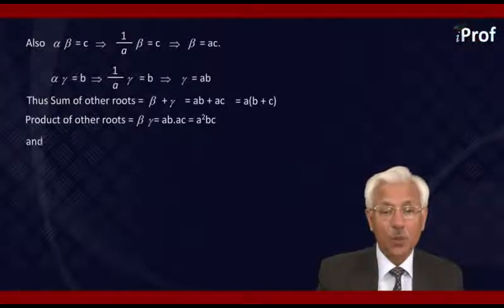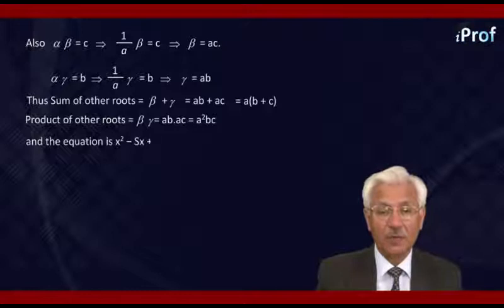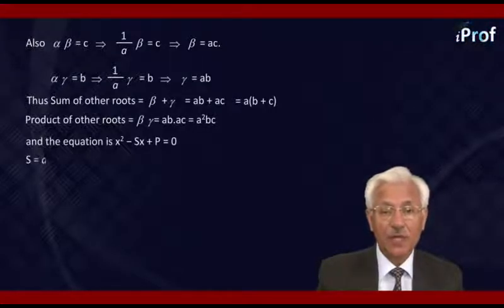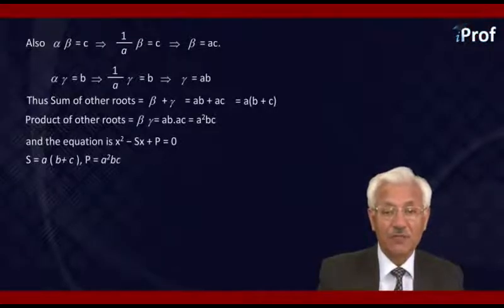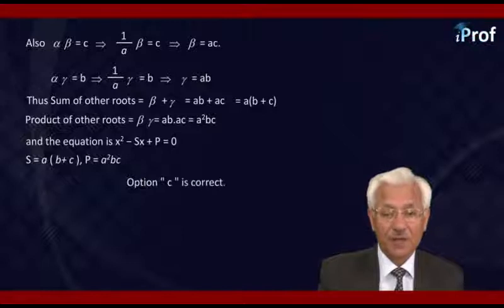Hence, the equation is X squared minus SX plus P equal to 0, where S is equal to A times (B plus C) and P is equal to A squared BC. Therefore, option C is correct.